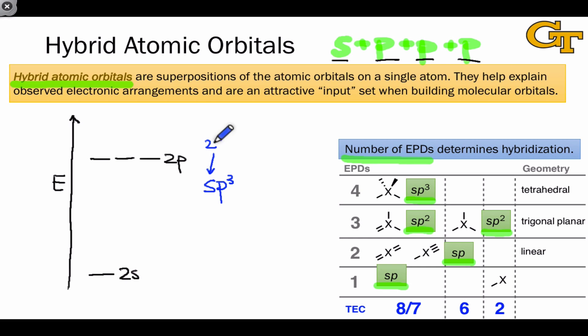So for example, if we start with the sp3 hybrids, because these are 25% s and 75% p, just based on the coefficients in the name sp3, the energy is 75% of the way from s to p. This is the energy of an sp3 hybrid.